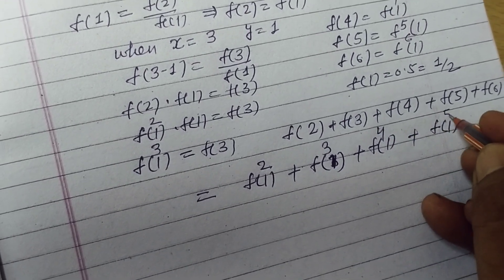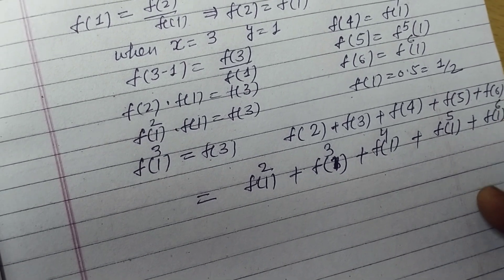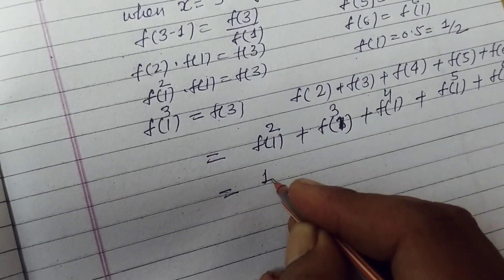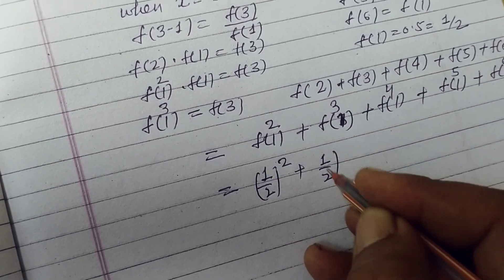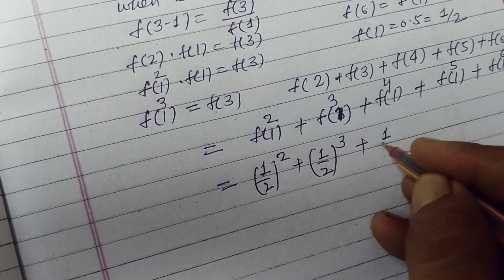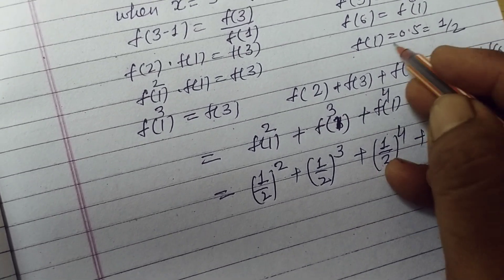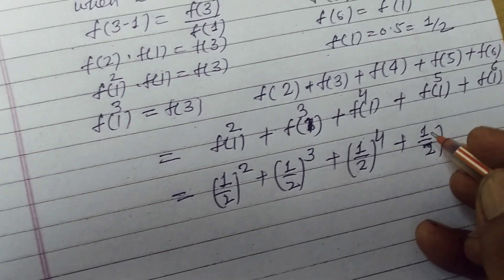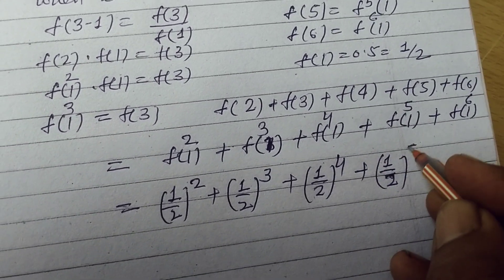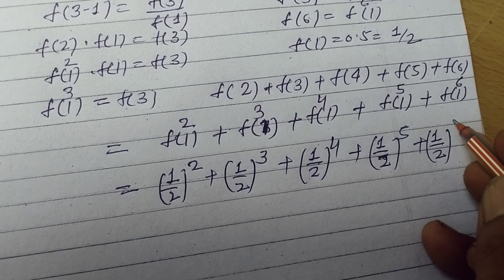f(1) to the power 5, and f(1) to the power 6. Therefore 1 upon 2 to the power 2, 1 upon 2 to the power 3, 1 upon 2 to the power 4... 1 by 2 to the power 6.